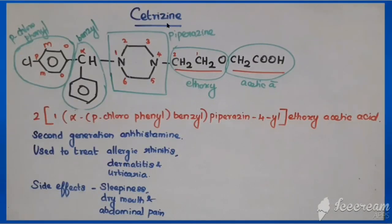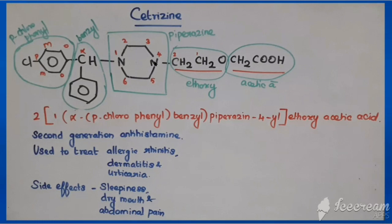Now we are going to see the structure of cetirizine. It is having a piperidine nucleus. The first portion is connected with a benzyl group, and the alpha-carbon of benzyl is connected with para-chlorophenyl. The fourth portion of piperidine is connected with ethoxyacetic acid. Comparing cetirizine with chlorcyclizine: in chlorcyclizine the fourth portion of piperidine is connected to methyl, but here that methyl group is replaced by ethoxyacetic acid — that is cetirizine.